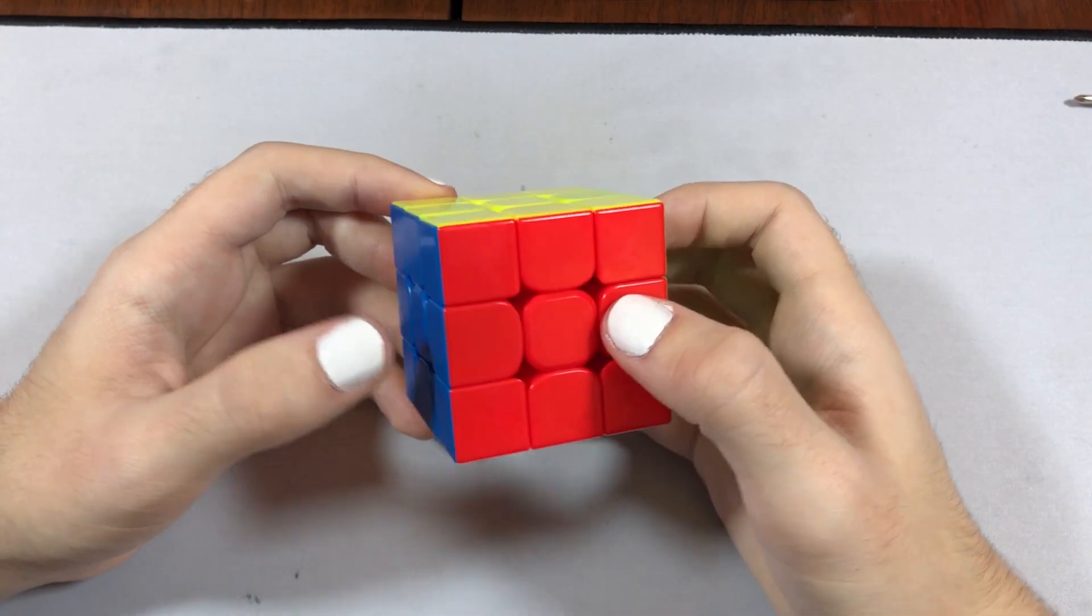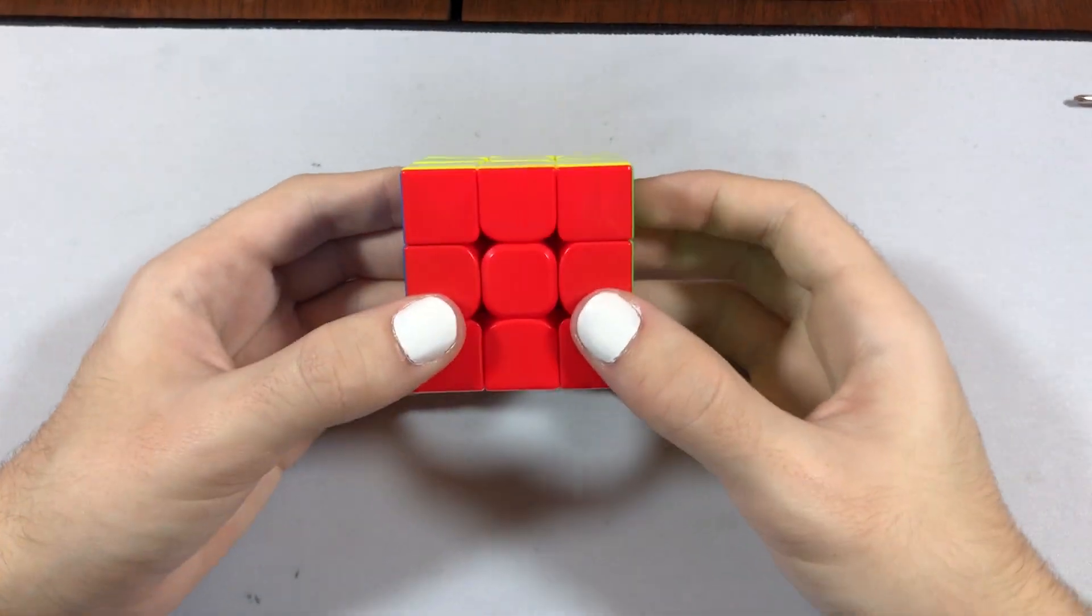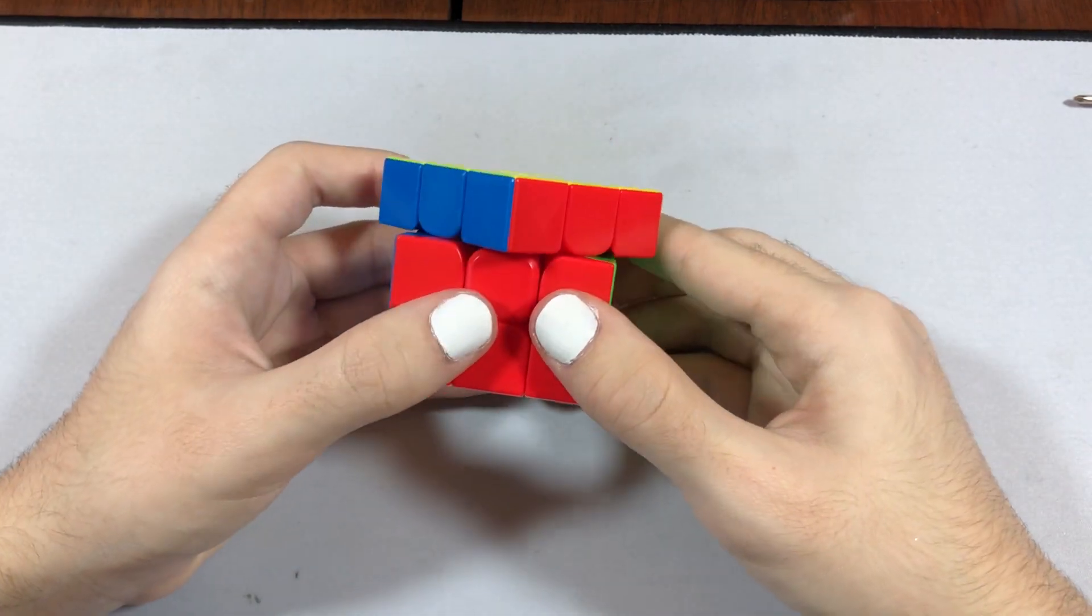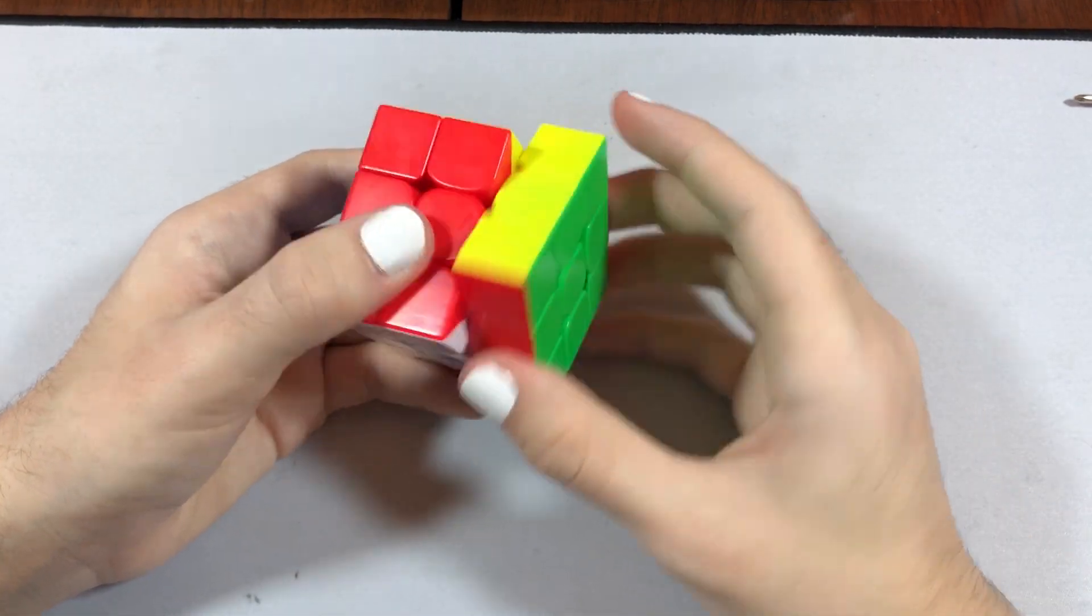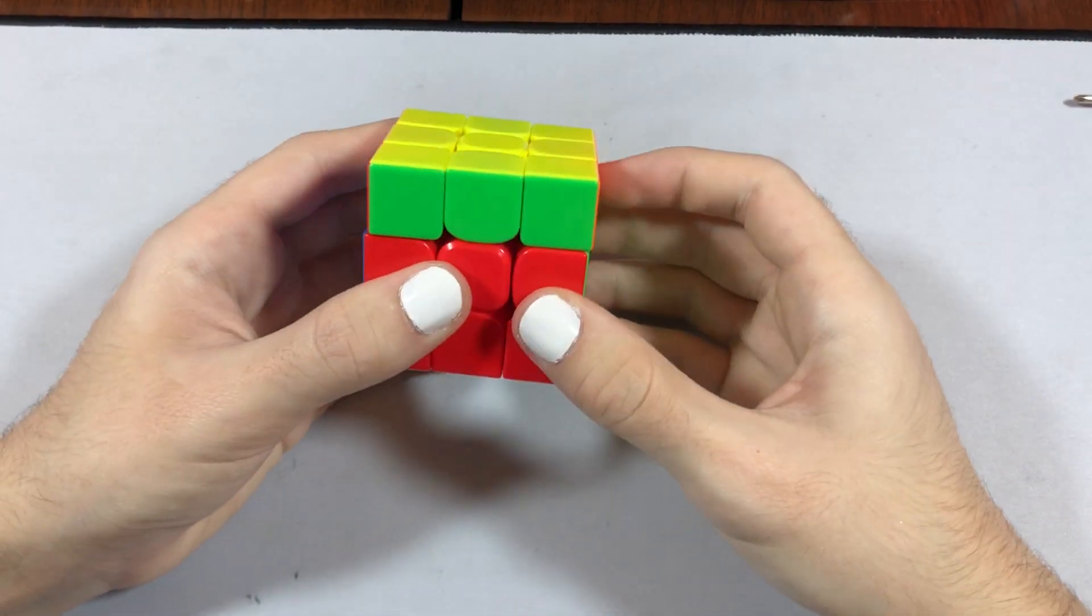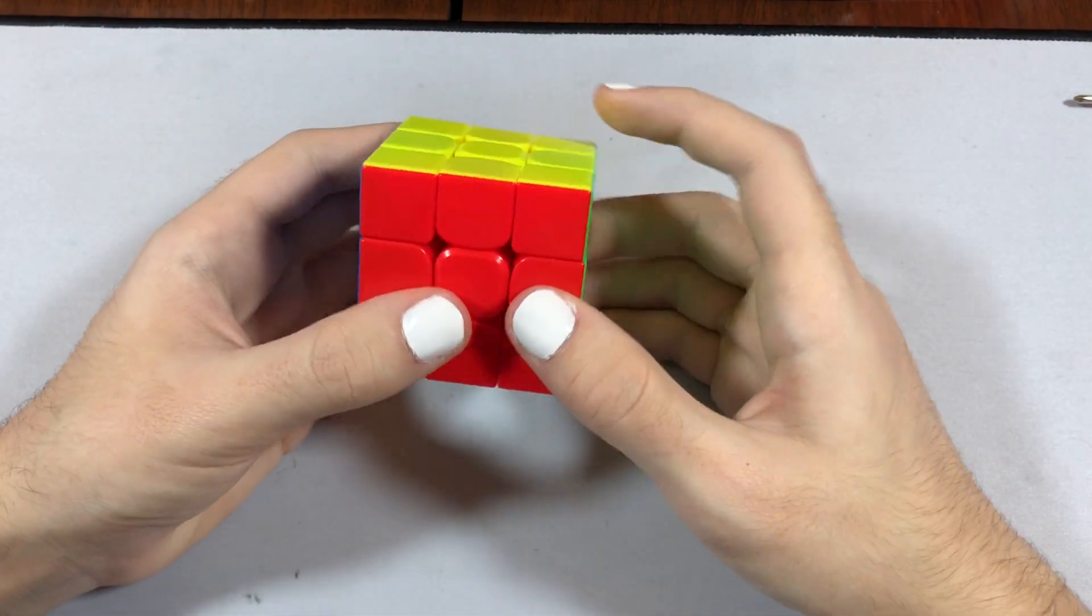All right, let's try corner cutting. Knowing Dayan, the corner cutting is going to be ridiculous. Easy. All right, so it maxes out around here. That's good. Reverse corner cutting. Easy. Easy. And that's forward corner cutting, so that's pretty good.